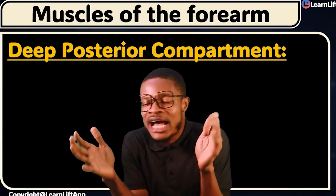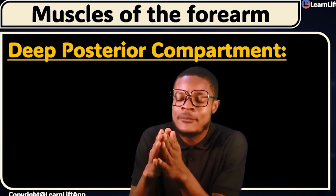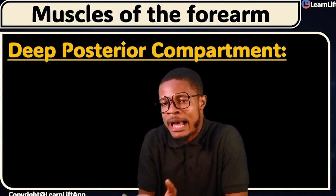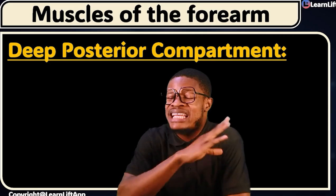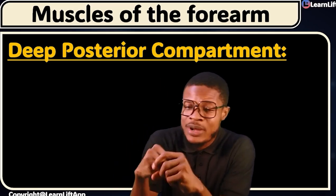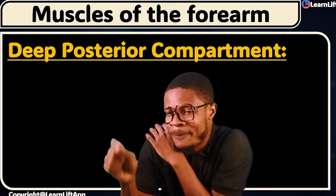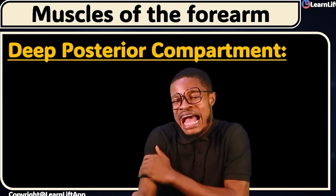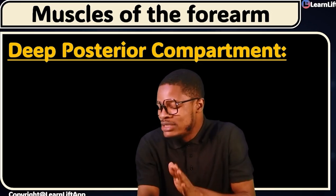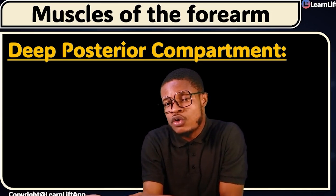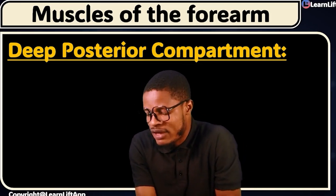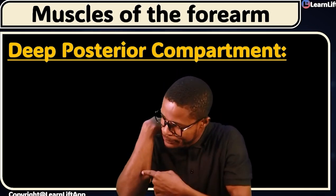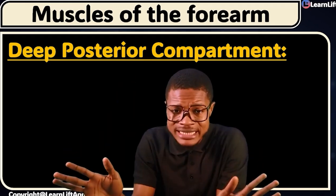This is Lesson 12, and we're going to be looking at the muscles of the forearm — specifically the deep posterior compartment. We've already looked at muscles of the back relating to the upper limb, the pectoral region, shoulder region, arm anterior and posterior compartments, forearm anterior compartment including the superficial and deep anterior compartments, and the superficial posterior compartment. Now we move to the deep posterior compartment muscles of the forearm.